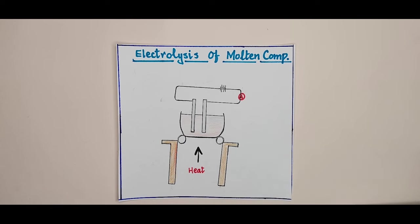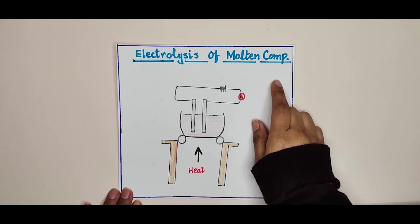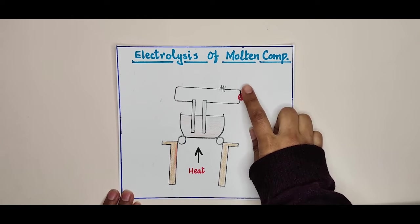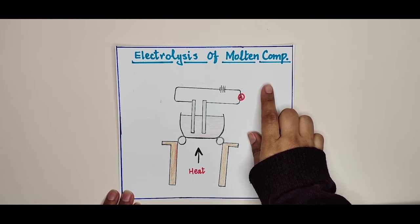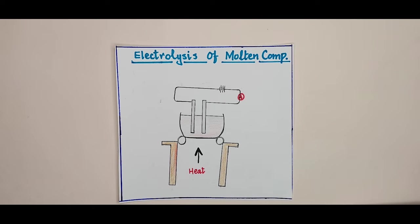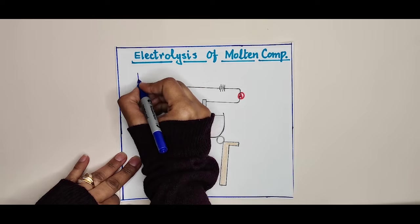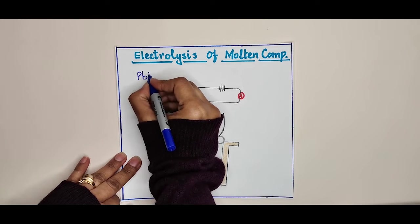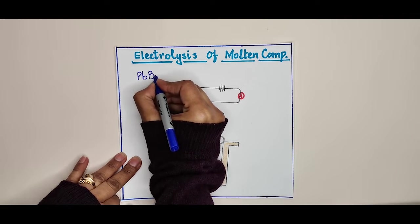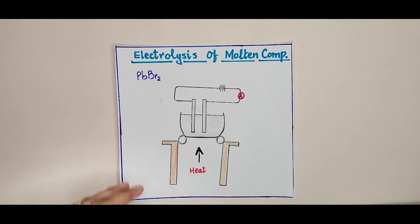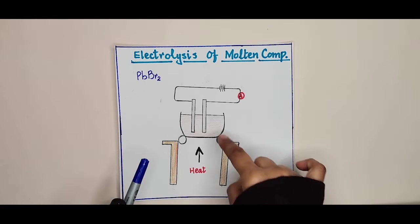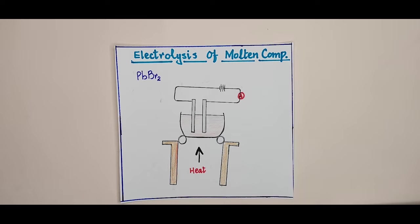Bismillahirrahmanirrahim. Today's lecture is about the electrolysis of molten compounds. In this experiment, we are going to conduct electrolysis of lead bromide. Lead bromide has the formula PbBr₂. Lead bromide is going to be melted first to find out what happens when it is electrolyzed. First, we have to set up an experiment and understand which apparatus we will use.